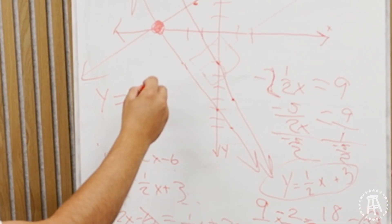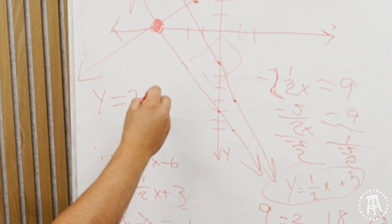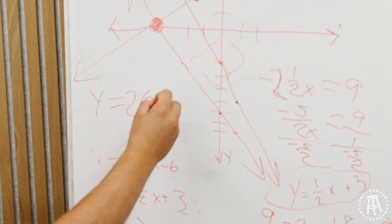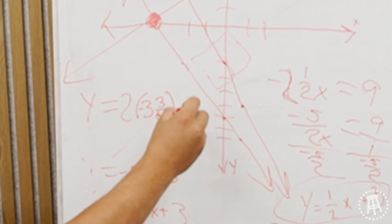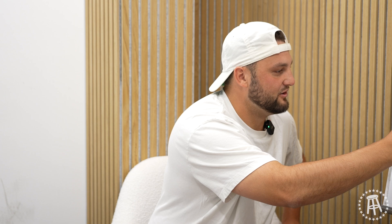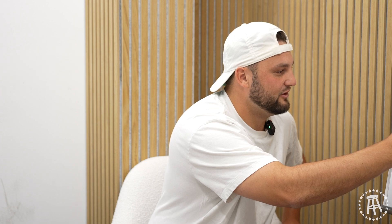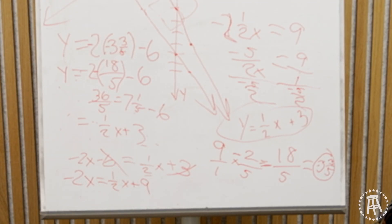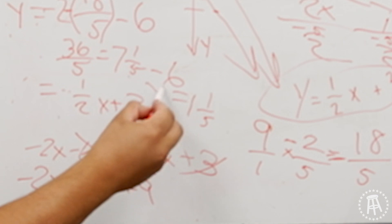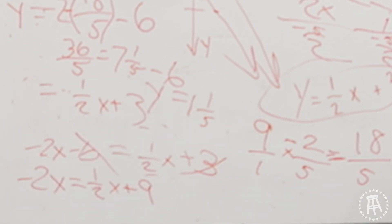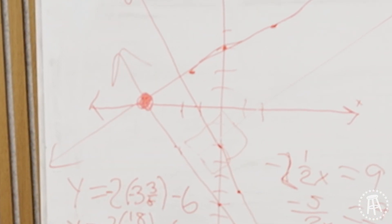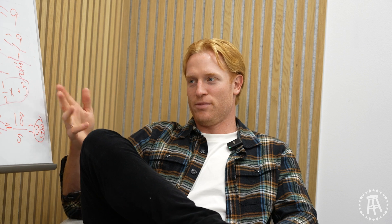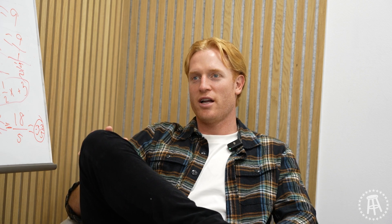We gotta get y. Y equals 2 times negative 3 and 3 fifths, minus 6. 7 and a fifth. Minus 6, which is 1 and a fifth. So that's your y. Boom. That's how we check our answers. This is some Good Will Hunting shit after all.